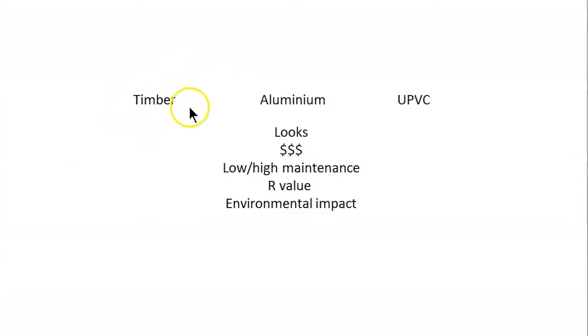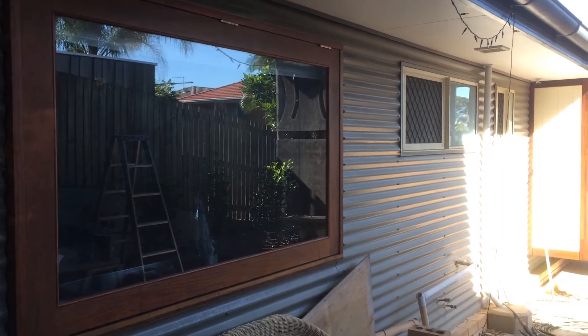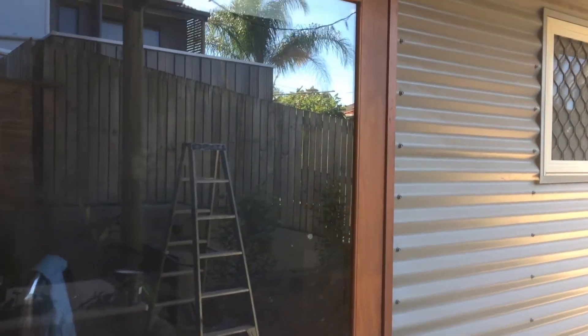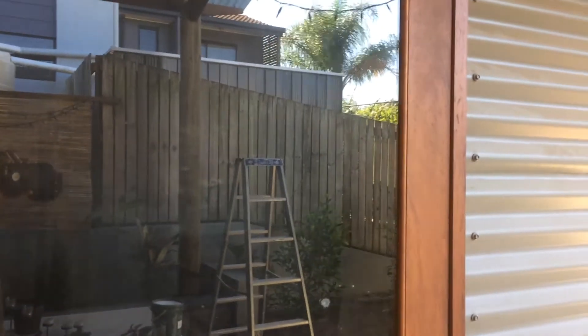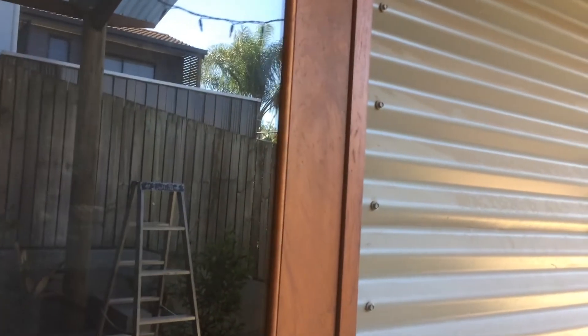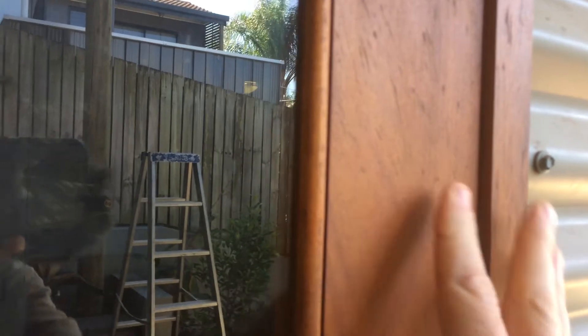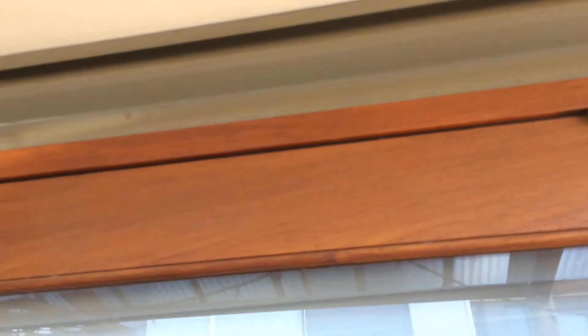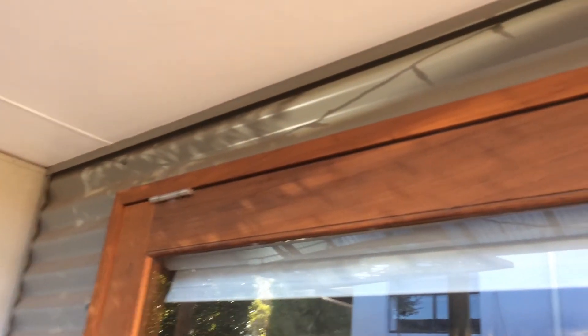So first let's start off by looking at our timber windows. Here we have a timber window sitting under the eaves of the house. It's also protected by a patio roof, so it's got quite a good amount of protection. This window has been installed for about seven years. It was oiled once when it was installed and you can see it's still in pretty much perfect condition.